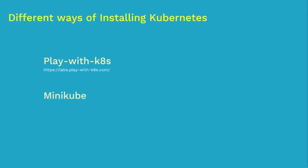Next comes Minikube. Minikube is ideal for someone who wants to install Kubernetes on their system but has very limited system resources. The key takeaway with Minikube is you do not have a separate Kubernetes master and a Kubernetes worker node architecture. You get all Kubernetes components packaged into one — it is an all-in-one setup. The same system acts as both the Kubernetes master and the Kubernetes worker node. We have a dedicated demo on this as well.